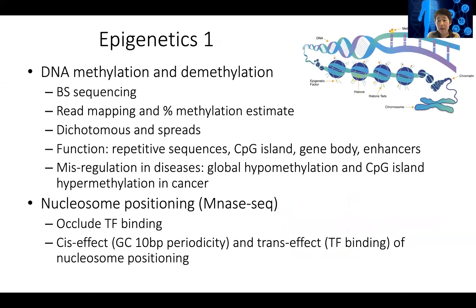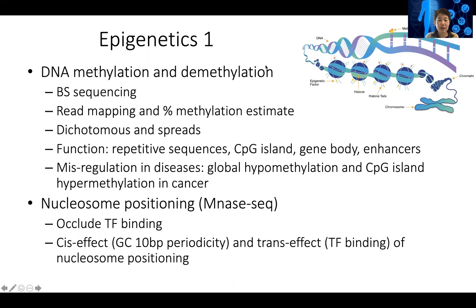Because the same transcription factor in different cells can bind to very different locations, this opened up the question that epigenetics might play an important role in deciding where a particular transcription factor would bind in a particular cell condition. There are different levels of epigenetics. The very first level is DNA modification directly, which is DNA methylation, and this is a dynamic process — you can methylate and demethylate the DNA.